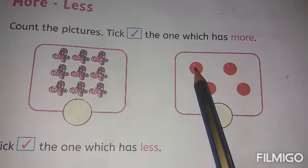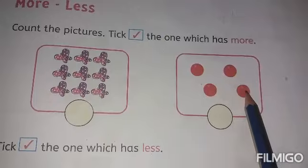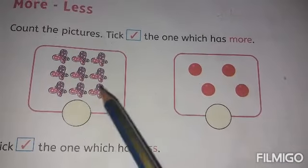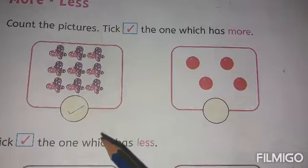And how many balls are here? 1, 2, 3, 4. Which one has more? Butterflies are more than balls. So put a tick mark.